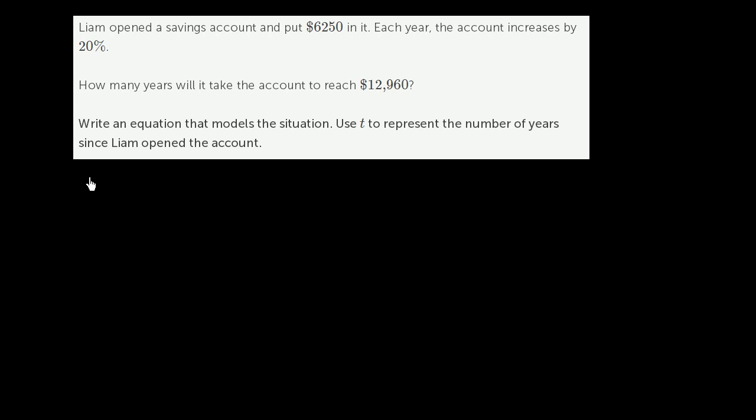Well, let's just think about it. So t represents the number of years since Liam opened the account. Let's say it's been 0 years since Liam opened the account. How much is he going to have? Well, he's just going to have $6,250 in it. That's how much he starts with.